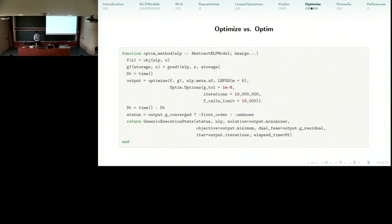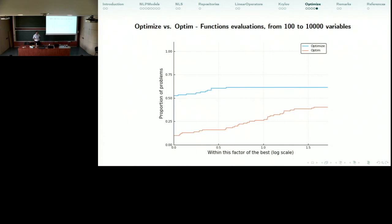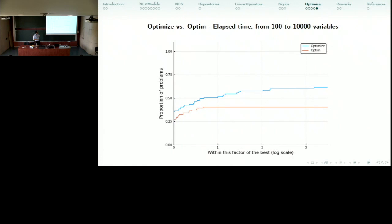So in addition, I made a comparison against Optim's LBFGS. Here I have a wrapper around Optim, so this Optim method receives an NLP, I do whatever is necessary to run on Optimize, that Optim's optimize, and I return a generic execution stats, which is something containing the optimize package to compare against our method. So here is a comparison using the number of function evaluations and the elapsed time, and from 100 to 10,000 variables, our method is a little more robust and efficient than Optim's. This is in the number of function evaluations, and in the elapsed time also, although not so prevalent.